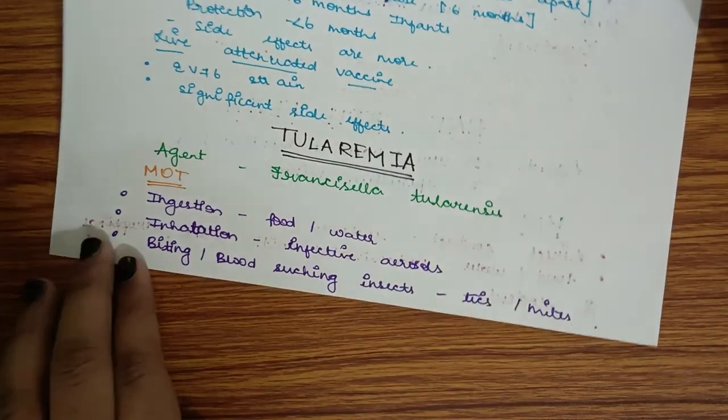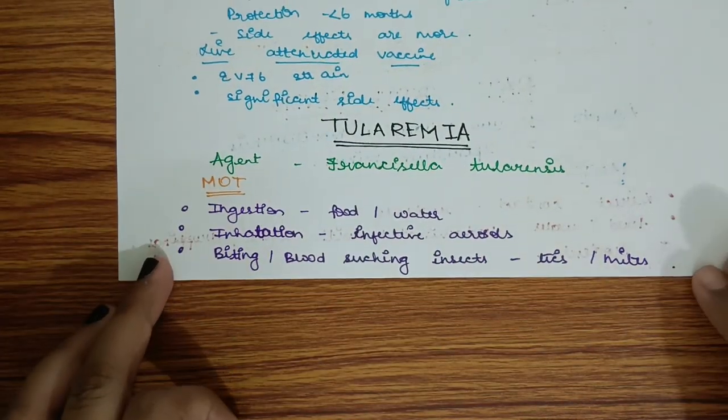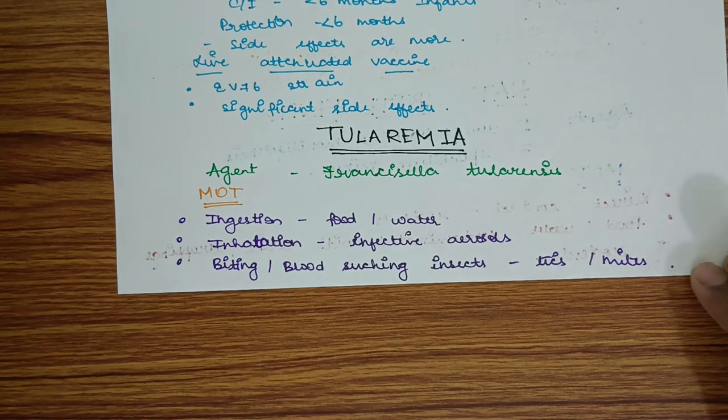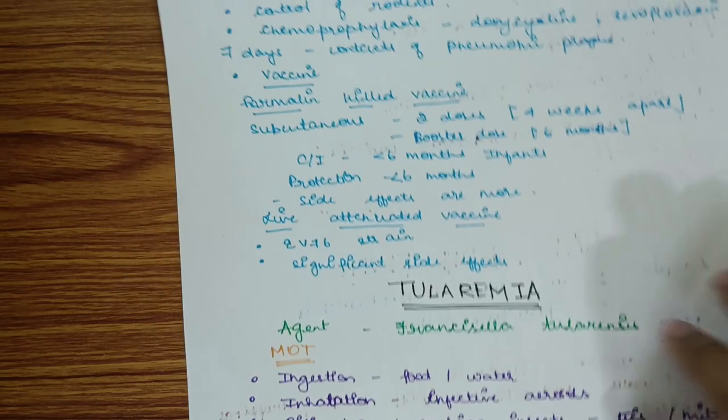Next topic is tularemia. The agent is Francisella tularensis. Mode of transmission: ingestion of contaminated food and water, inhalation of infective aerosols, and biting by blood-sucking insects such as ticks and mites.